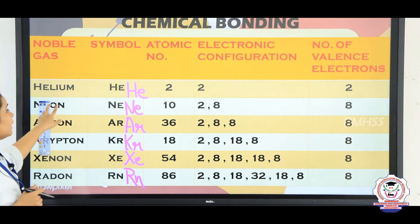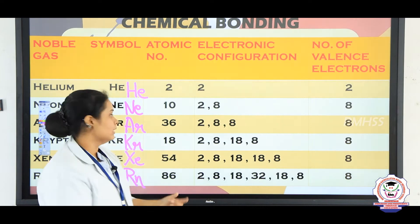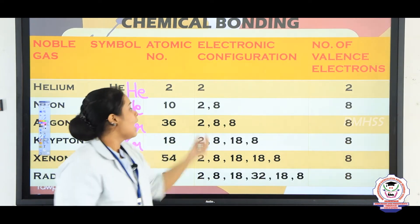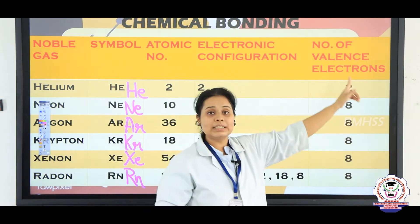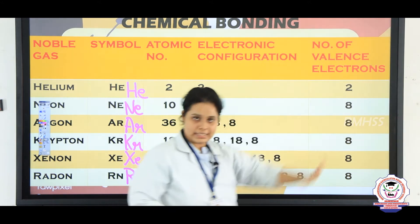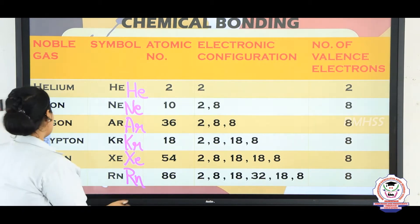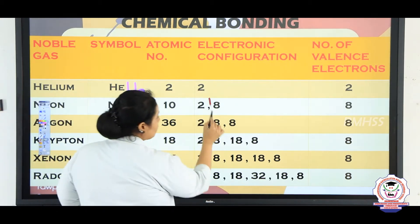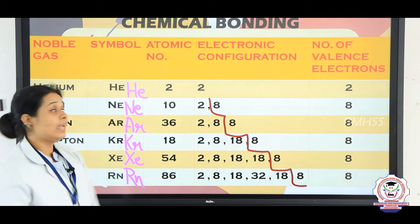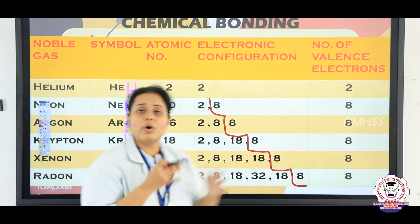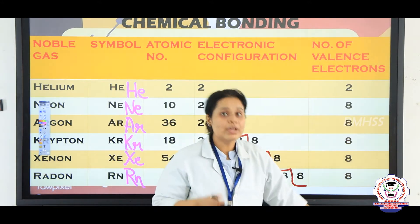Considering neon, the atomic number is 10. The first shell will have 2 electrons and the outer shell will have the maximum of 8 electrons, and therefore the valency of this atom will be 8. Similarly, argon, krypton, and xenon all have a valency of 8. This is why all atoms which want to make a bond want to reach the configuration of 8.